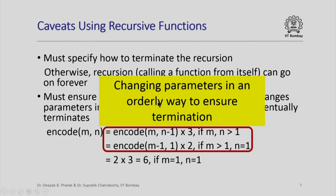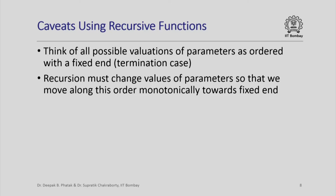It is very important to change the parameters in an orderly way to ensure termination. In general, when designing a recursive function, you have to think of all possible valuations of the parameters ordered in some manner with a fixed end — and we identify this end with the termination. When you call the recursive function with specific parameter values, the recursion must change them monotonically towards this fixed end where termination is guaranteed.